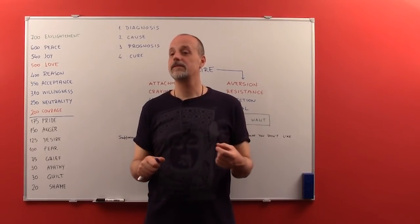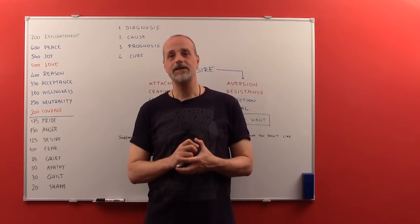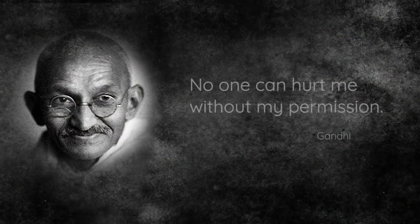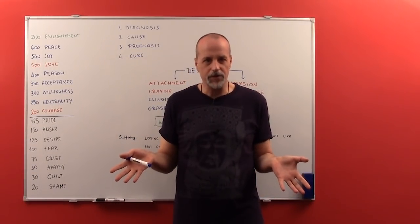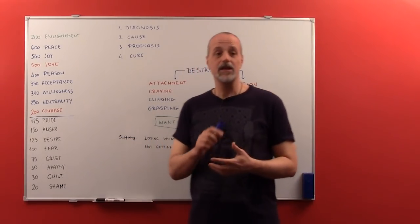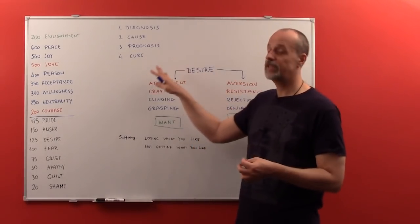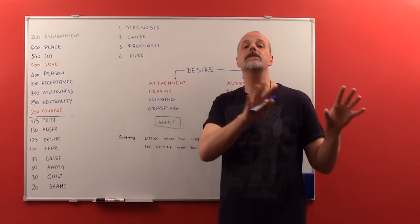Maybe now you will understand a quote from Gandhi that's really not that well understood. He said, 'No one can hurt me without my permission.' What do you mean no one can hurt me without my permission? I mean, of course they can. Well, actually they can't, because you being hurt is only a matter of your own attachments and your own resistances to that particular situation.